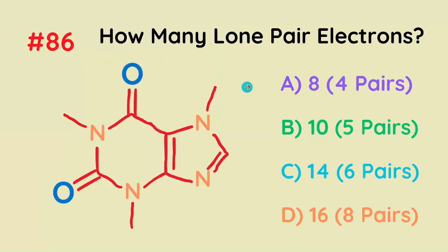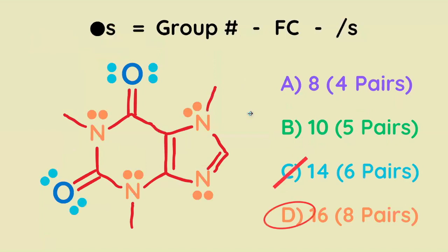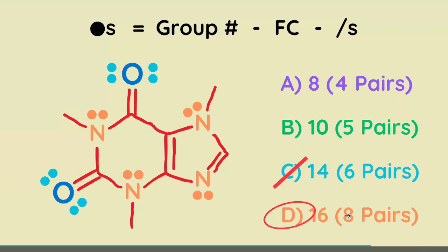How many lone pair electrons are in this molecule? Using your knowledge of formal charge, you can rearrange the equation to solve for the number of dots, and you get a total of 16 dots — eight pairs of lone electrons.